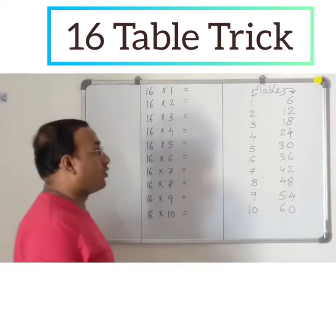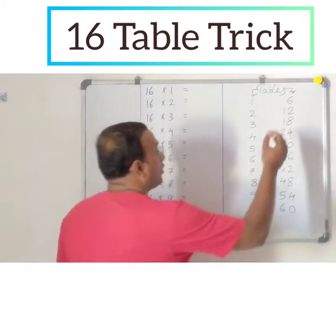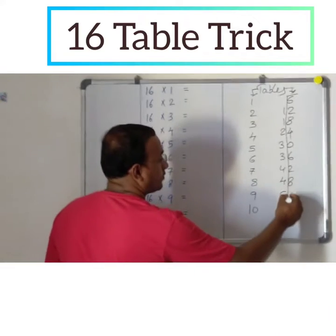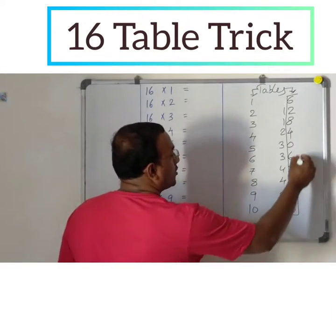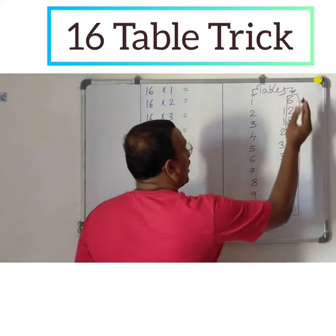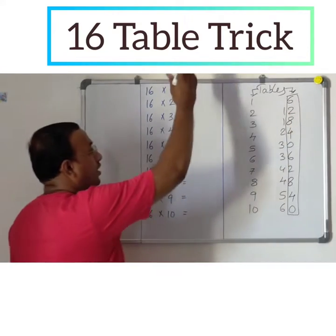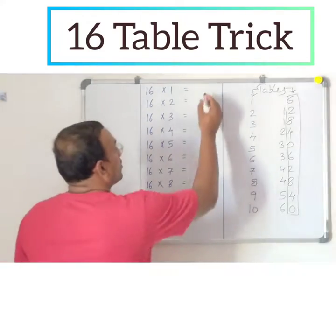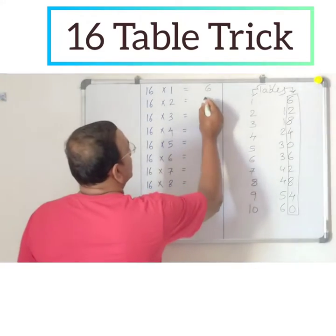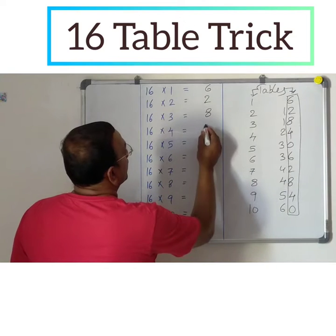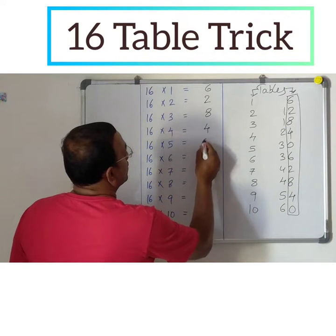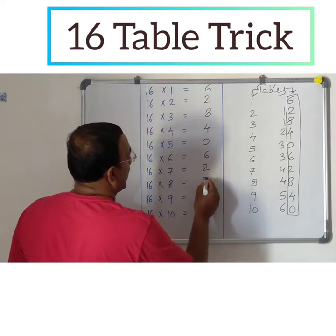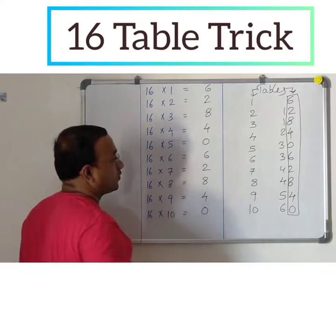Next, I am going to take the corner digits of this 6 table and put them directly into the 16 table as the one's place. So: 6, 2, 8, 4, 0, 6, 2, 8, 4, 0.